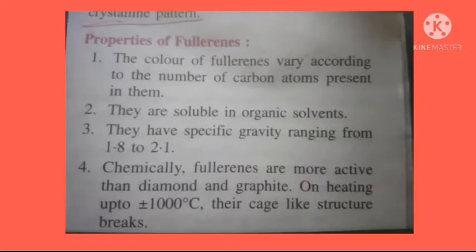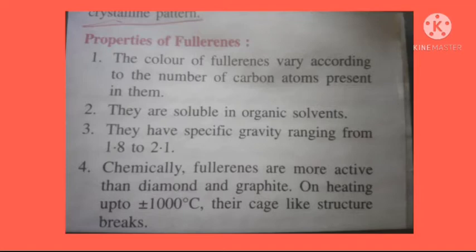Fullerenes are clusters of carbon atoms that exist as unlinked particles. The properties of fullerenes include: first, their color varies according to the number of carbon atoms; second, they are soluble in organic solvents; third, they have a specific gravity from 1.8 to 2.1.